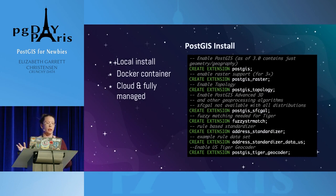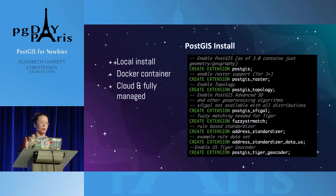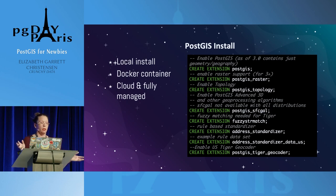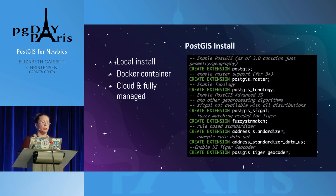Turning towards actually getting PostGIS going: you can obviously do a local install and compile PostGIS yourself. There are Docker containers out there with a bunch of PostGIS and associated tools installed if you don't want to do it yourself. An easy way to get started if you don't want to mess with any of that stuff is just to use one of the cloud or fully managed solutions — you can get PostGIS installed on Amazon RDS or Google Cloud. Crunchy Data has a fully managed Postgres product too. The CREATE EXTENSION postgis command will install most of the things you need for the data types and processing.